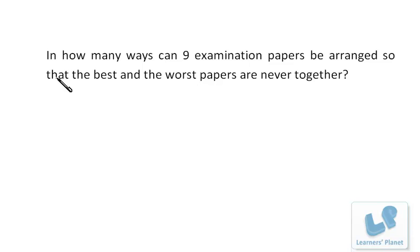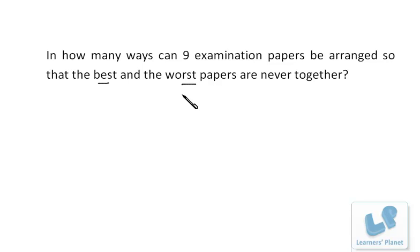Let's see this question: in how many ways can nine examination papers be arranged so that the best and the first papers are never together? In this case, the best paper and the first paper are already fixed — we don't have to choose them. The remaining papers are seven. We don't want the best and the first paper to be together, so let's think about the approach carefully.